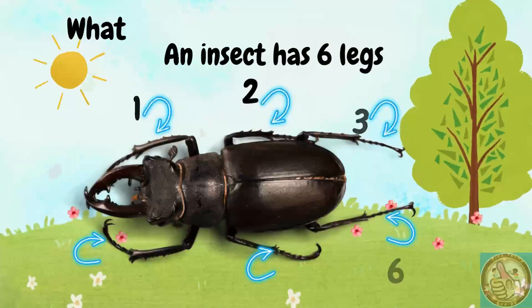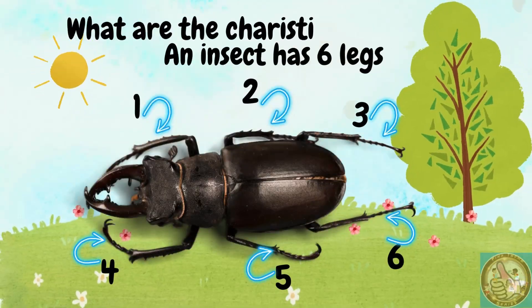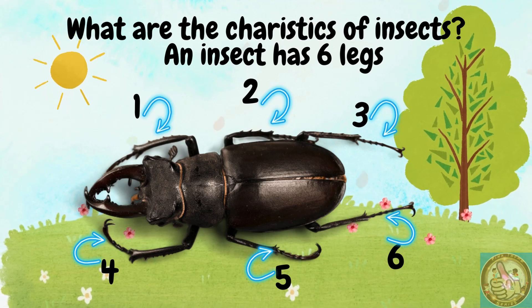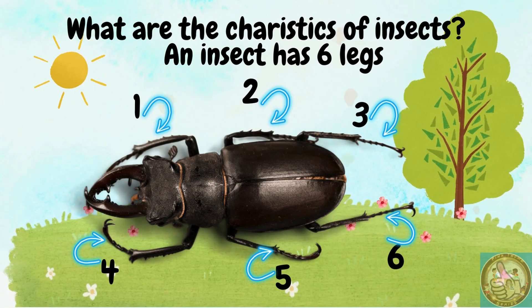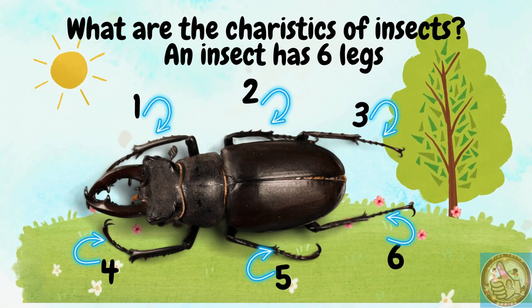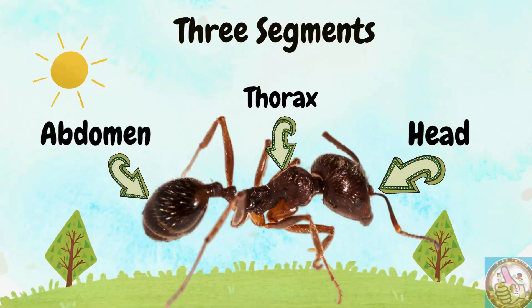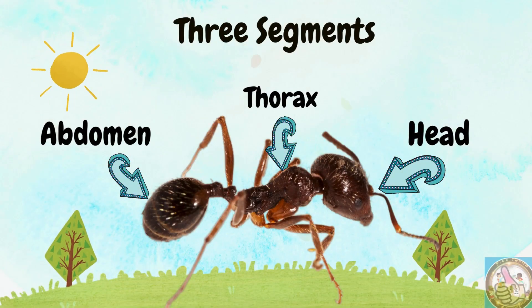What are the characteristics of insects? An insect has six legs and three segments, which are the head, thorax, and abdomen.